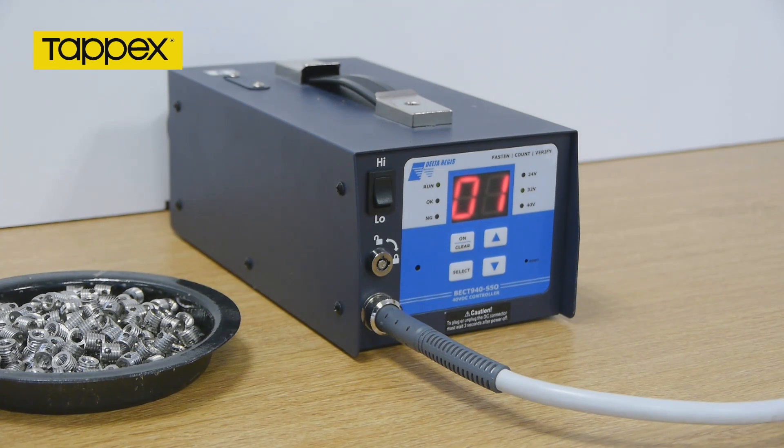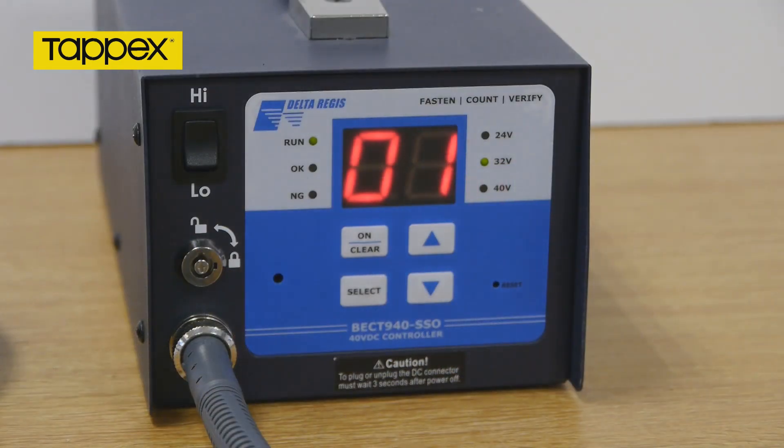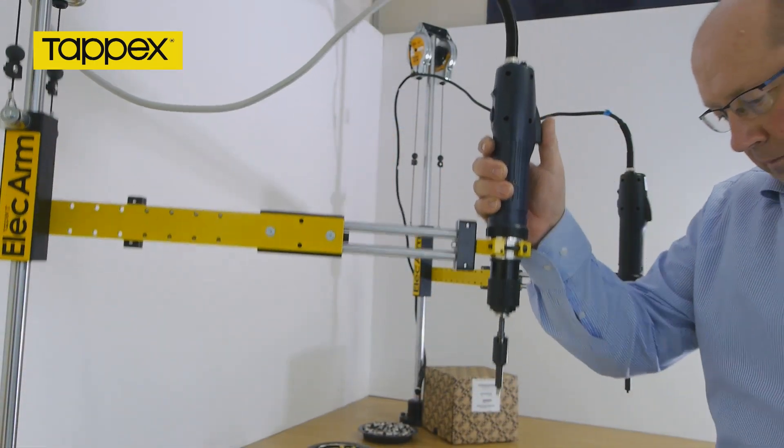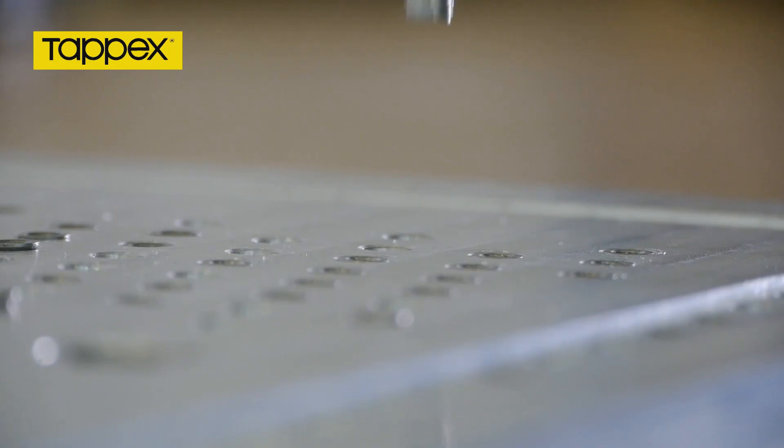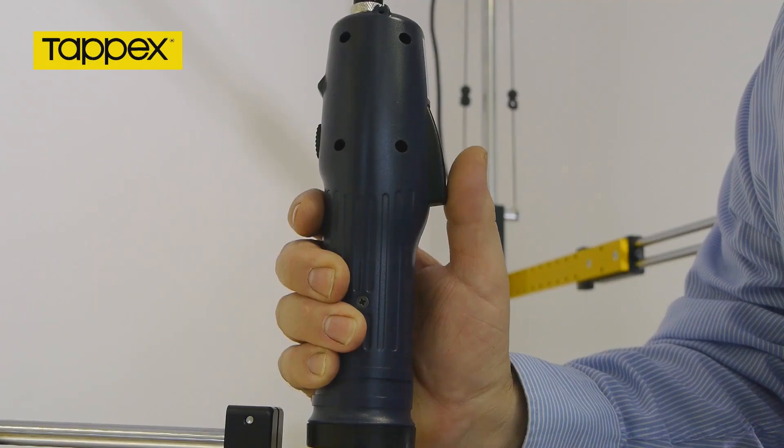Included with each TAPX Alec arm is a 32-volt or 40-volt controller incorporating the power supply. Full technical support is available. Please contact our sales engineers to specify the correct TAPX Alec arm for you.